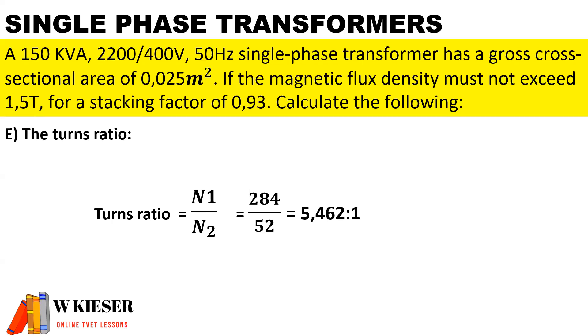To determine the turns ratio, we have the number of turns on the primary side versus the number of turns on the secondary side. You'll notice that the 52 is a smaller value, it will go into itself once and it will go into 284, 5.462 times. Therefore, we have a ratio of 5.462 on the primary and one on the secondary.